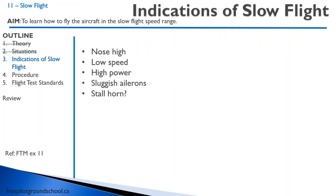Let's talk about some indications of slow flight. We're in a high drag configuration because of high induced drag, so high drag means we're going to be going pretty slow. You're going to end up with high power and a low speed, and you'll also have a nose-high attitude. The aircraft controls will feel sluggish — you won't have a lot of air going over the ailerons — and the stall horn might very well be going off.